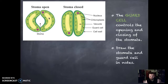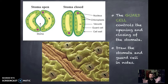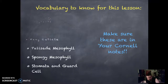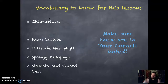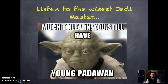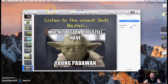Please draw the stoma in your notes as well. In the SEM image, stomata look like little eyes blinking at you — you can see the guard cells around the edges and the opening where gas is released. Here is the vocabulary you should have in your notes: chloroplast, waxy cuticle, palisade layer, spongy layer, stomata, and guard cell. Do your summary at the bottom, and I will see you in class. As the wisest Jedi master says — much to learn you still have. See you later, kids!